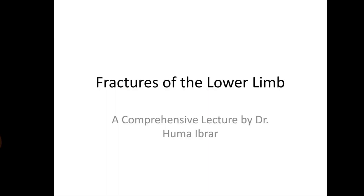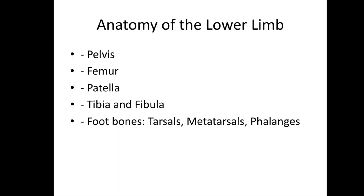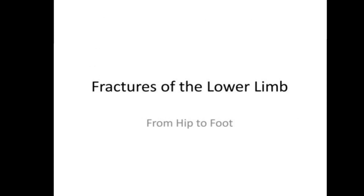Starting the topic: fractures of the lower limb. First, we'll talk about the anatomy of the lower limb. It consists of the pelvis, femur, patella, tibia, and fibula. Foot bones include tarsals, metatarsals, and phalanges. We'll talk in detail from hip to foot about fractures of the lower limb.